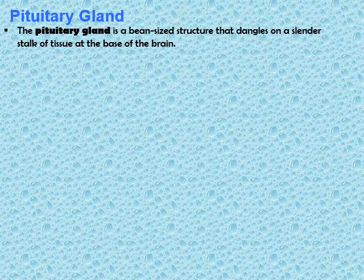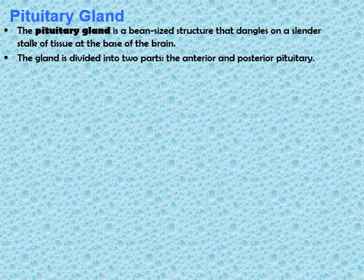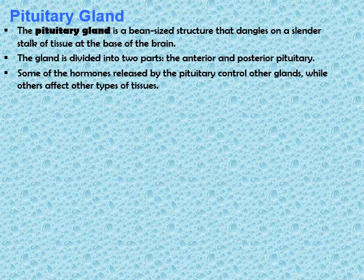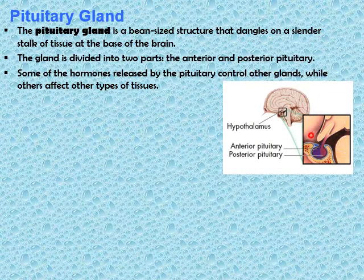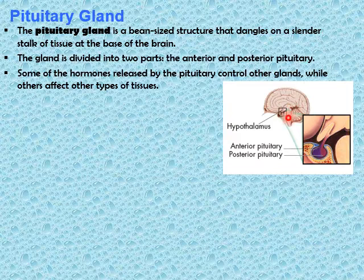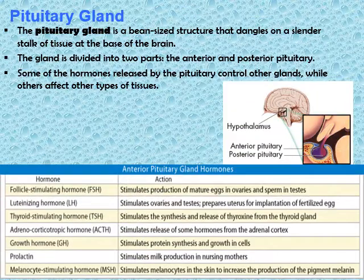The pituitary gland is a pea-sized structure that hangs on a slender stalk of tissue at the base of the brain. The gland is divided into two parts: the anterior pituitary and the posterior pituitary. Some hormones released by the pituitary control other glands, while others affect other types of tissues. As seen in the diagram, the pituitary gland is located at the base of the brain, just below the hypothalamus, and its secretions control other endocrine glands or tissues. That is why we consider the pituitary gland the master endocrine gland.